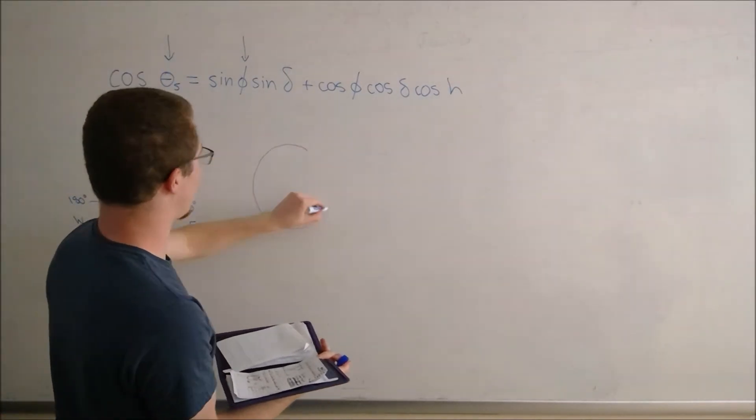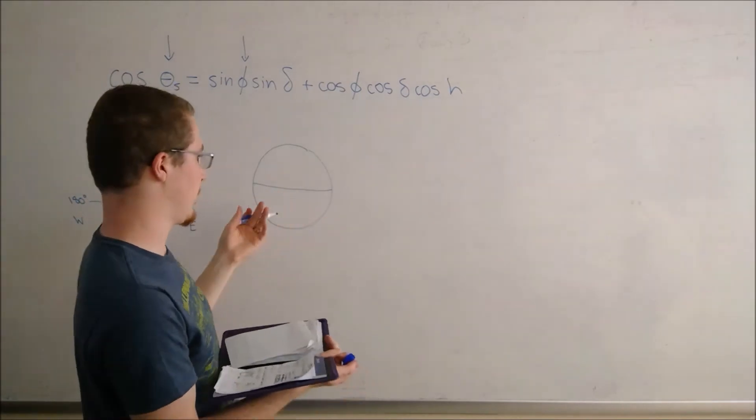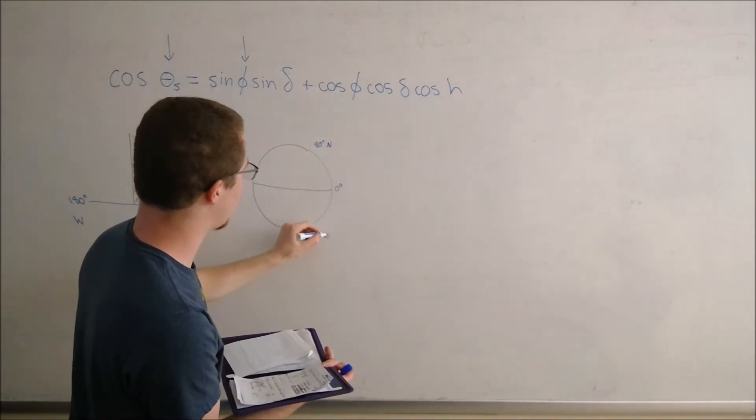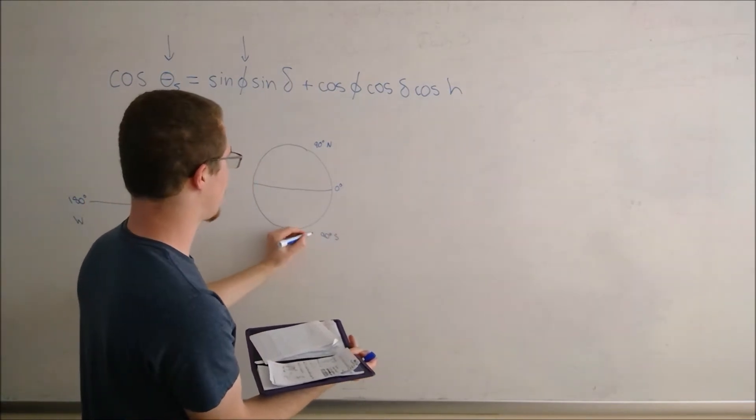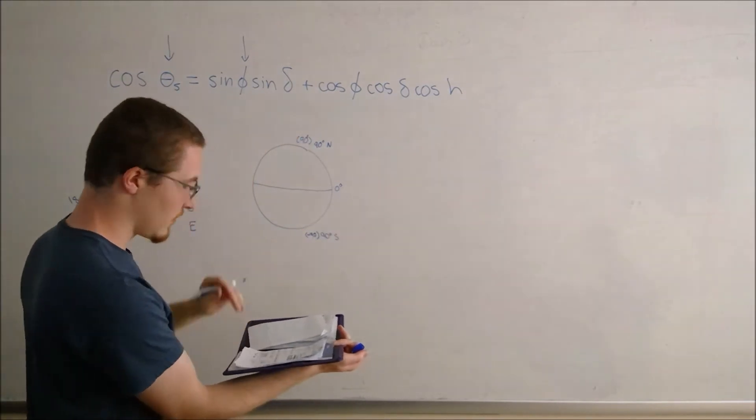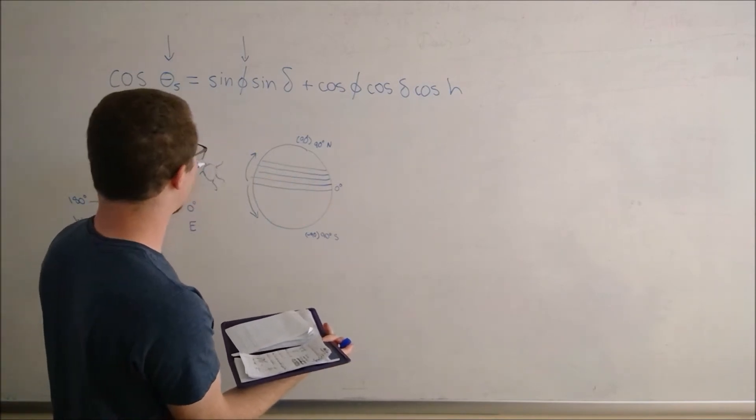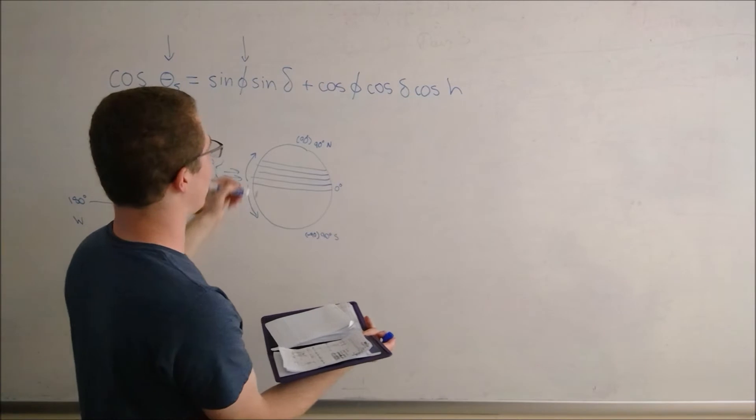Now I explain latitude. I fast forward mainly because this is a familiar topic to most of you, but I wanted to explain it anyways just so we get a picture for when we explain tilt. Here I show that the poles are at 90 degrees north and south and that the maximum solar radiation is incident on the equator.